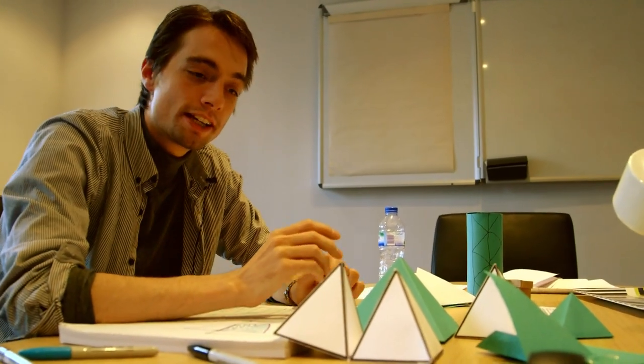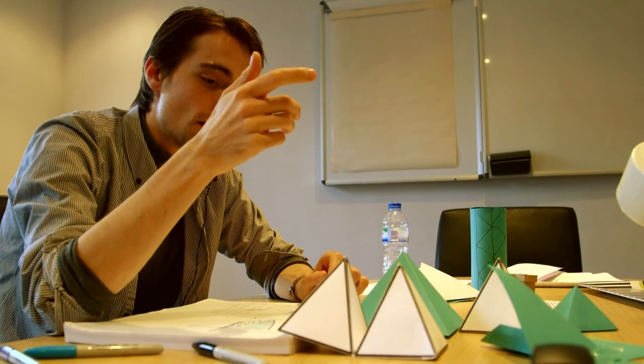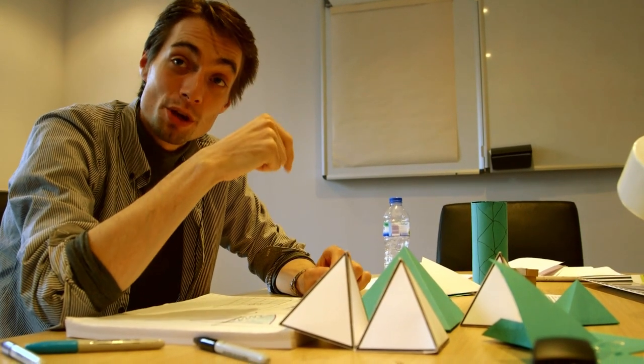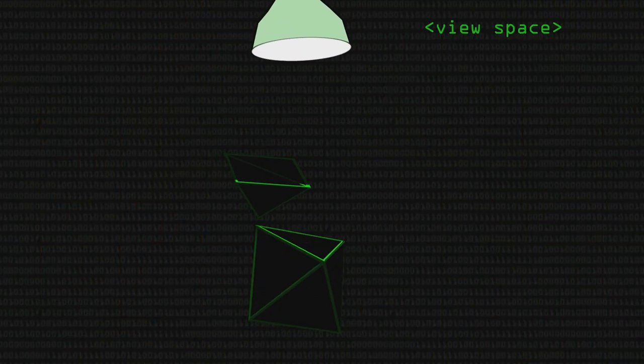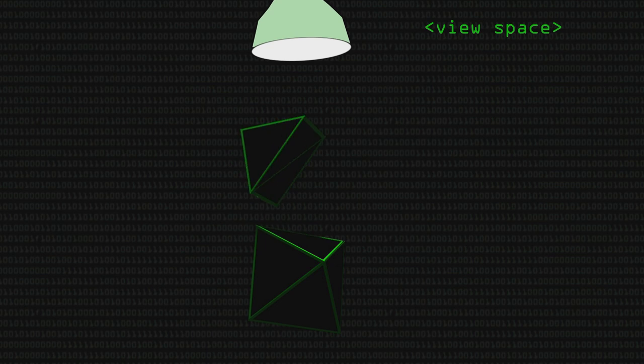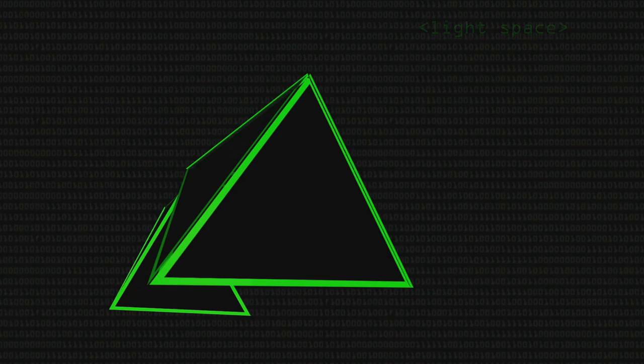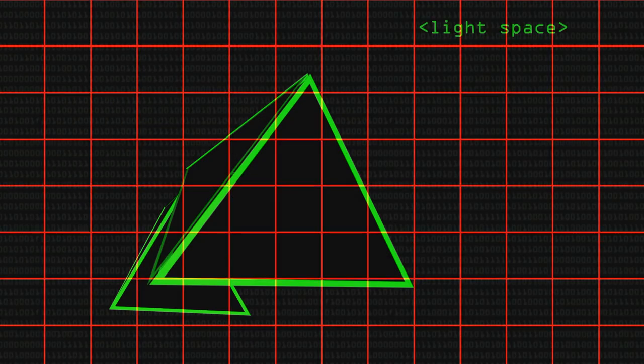What we can do is we can render the scene, not from the camera's point of view, but from the point of view of the light. Rather than rendering shaded pixels, however, we just output the depth buffer values. So what we end up with is a buffer of data containing the depth, a per-pixel depth, from the position of the light.